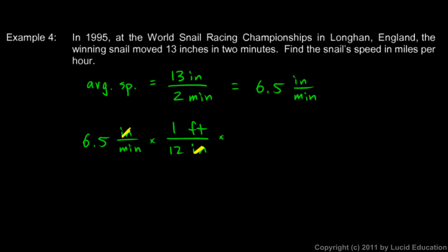And then I'm going to multiply by 1 again. And now I'm going to get rid of the feet and get miles. And this way you can see that the feet up top and down on the bottom are going to cancel out. And I know that 1 mile is 5,280 feet.